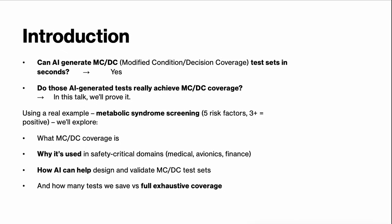MCDC is a code coverage criterion that checks whether each individual condition in a decision can independently change the outcome of that decision. For every condition we need a pair of tests — a pair where only that condition changes, all others must stay the same, and the overall result flips from true to false or vice versa. It's used in safety-critical software — avionics, medical, automotive, financial — to prove that no part of the decision logic is dead or unused.